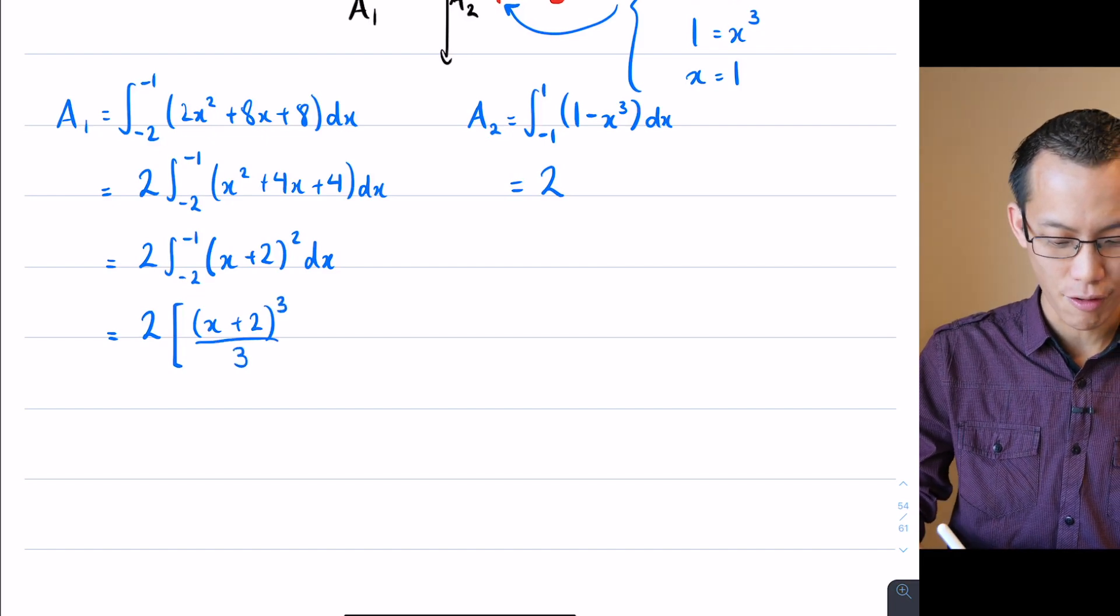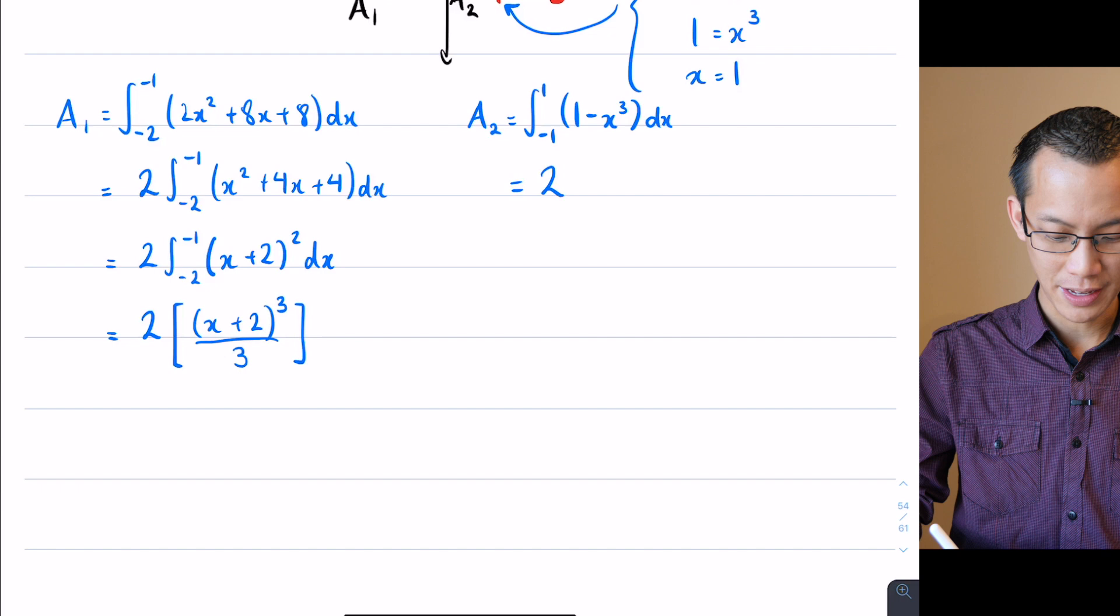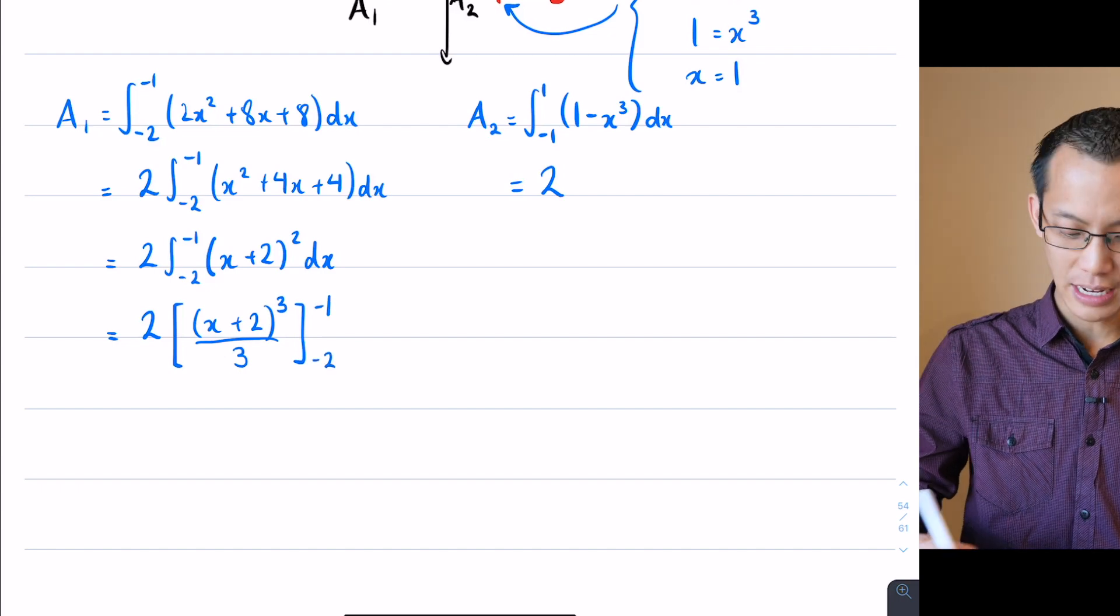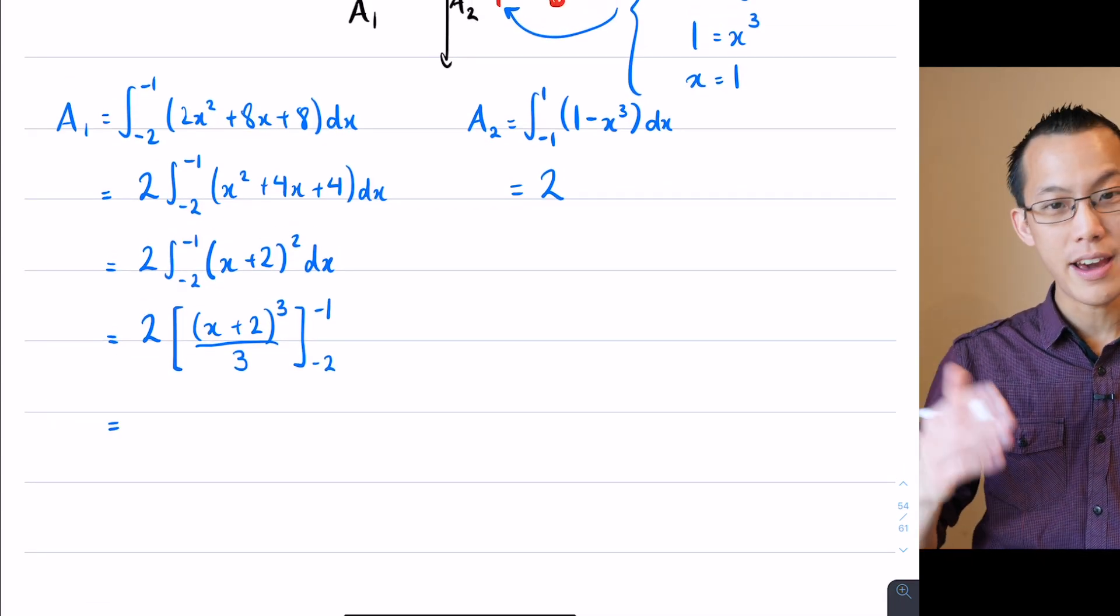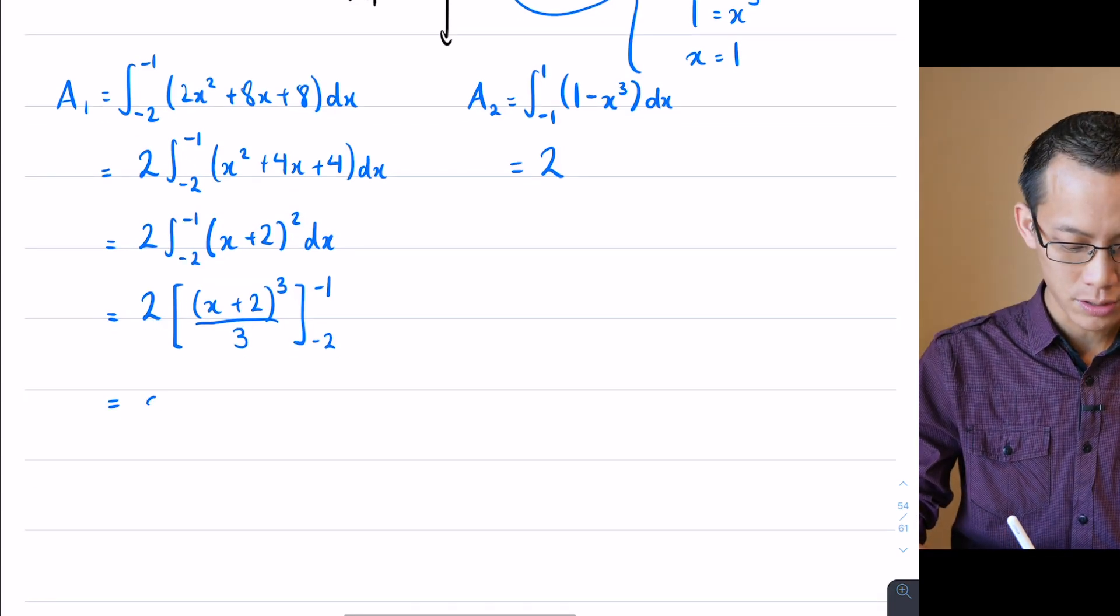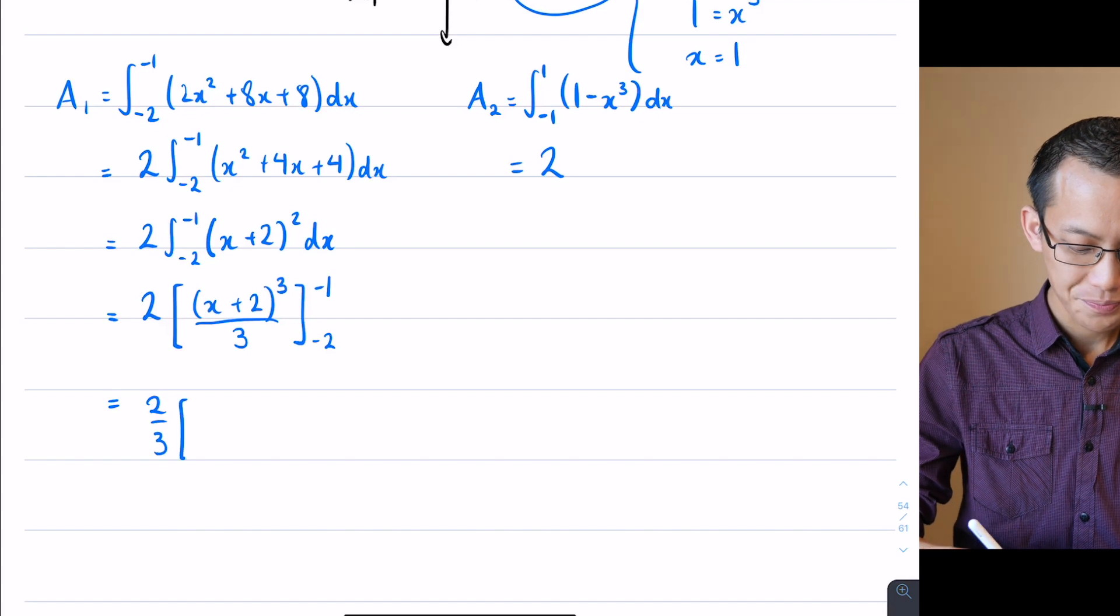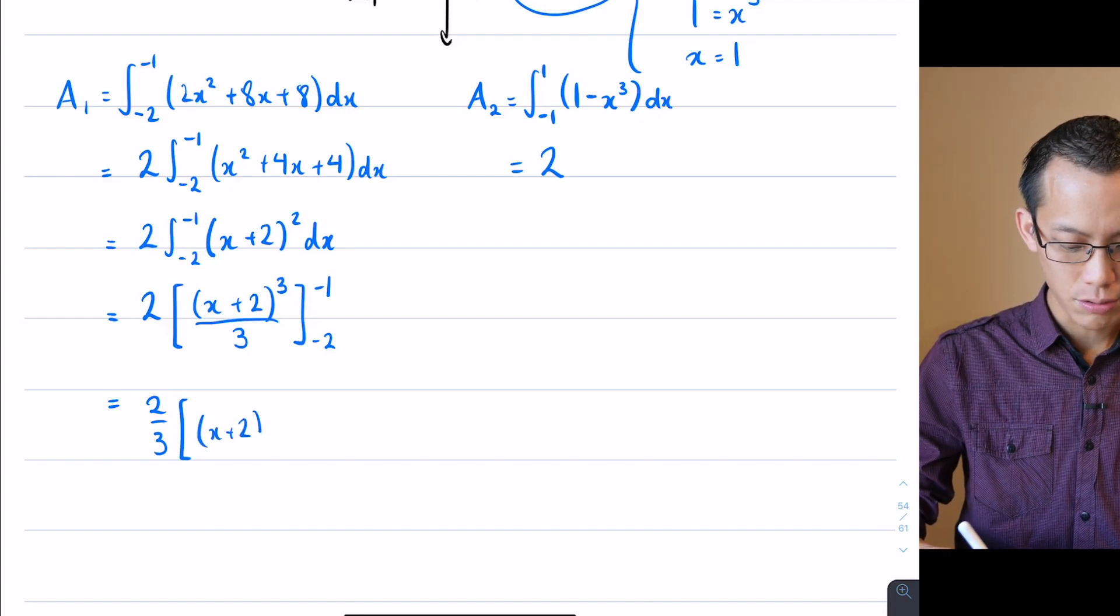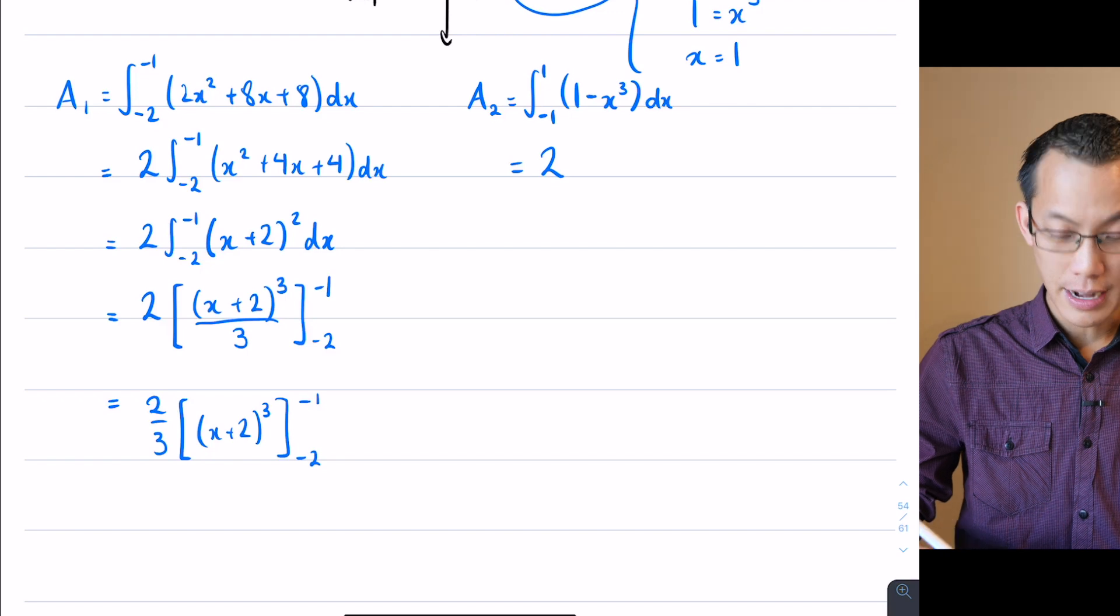So I'm going to do the reverse chain rule now. I have a look, this is a really nice example because the inside derivative happens to be one so I kind of don't need to worry about it. I increase the index and then I divide through by the index like so. Now I'm going from negative 2 to negative 1, I can factorize again. The way I did the 2 at the front I can take that divided by 3 at the front as well, so that goes 2/3, that's (x + 2)³ from -2 to -1.